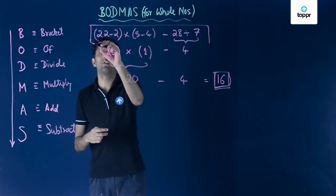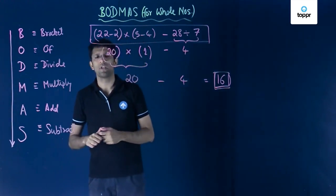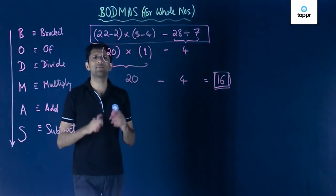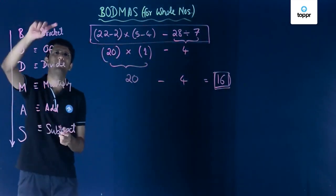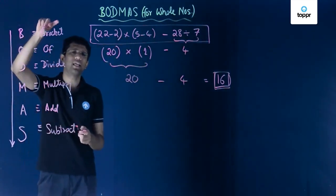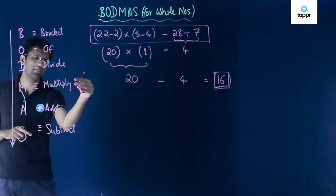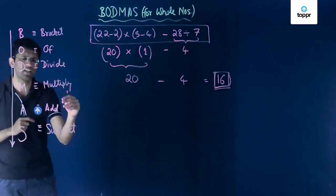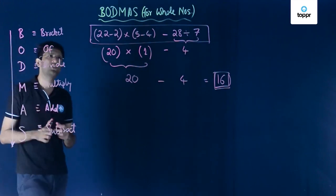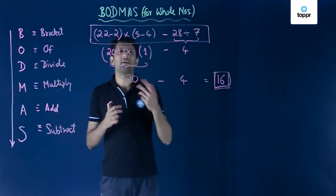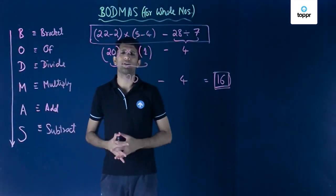Whenever we are faced with a lengthy expression, we first start with brackets, then look at the 'of' term, then divide, multiply, add, and finally subtract. This is the order in which whole numbers are resolved using the various operators.